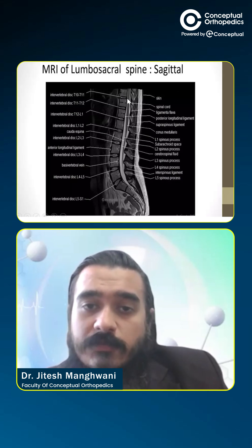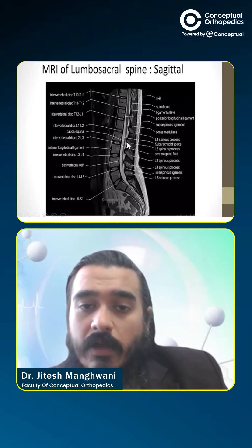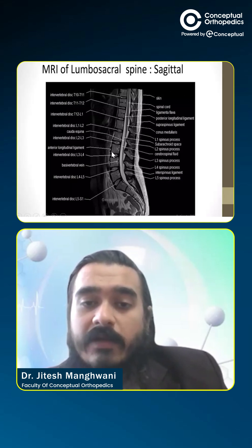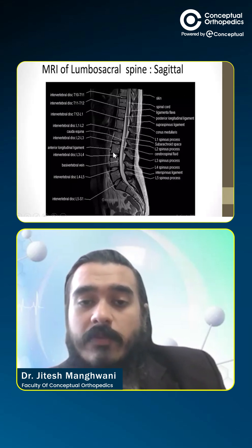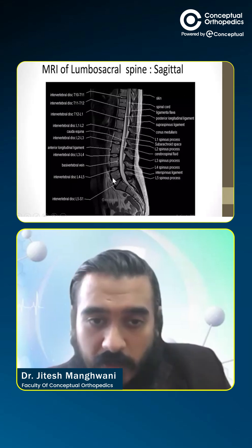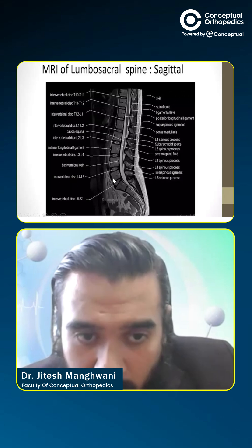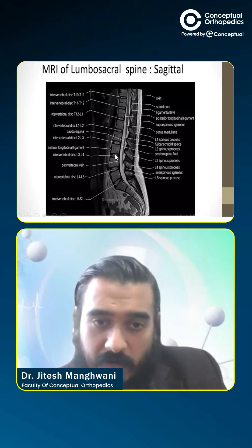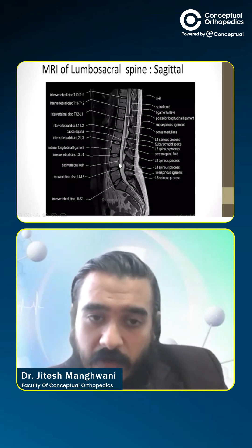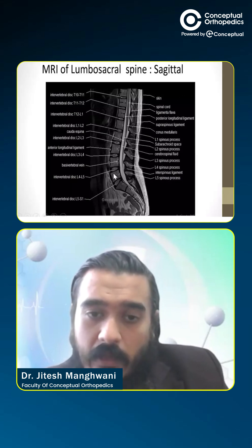This is the disc space present in between the two vertebrae. These are the cauda equina nerve roots. The anterior longitudinal ligament runs through the anterior aspect of the vertebral bodies. The intervertebral disc is here, and the basivertebral vein is present at the mid-vertebral body.